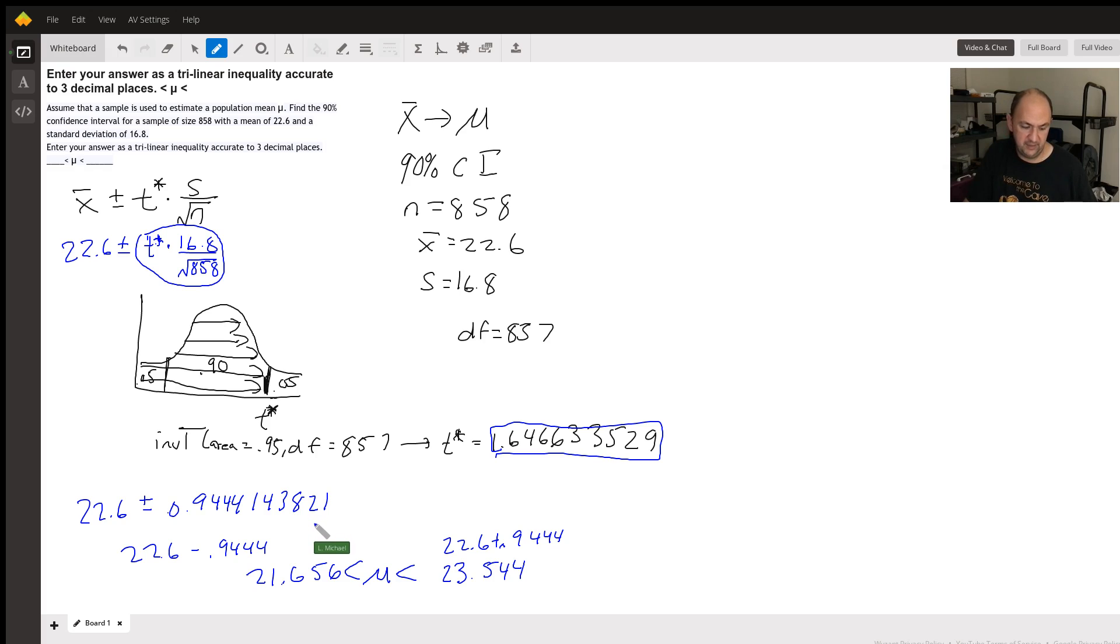If you have a TI-84 calculator, you can confirm this by going to stat, then to your tests section, and running a T-interval. Let me verify using the T-interval test. X̄ is 22.6, standard deviation is 16.8, sample size is 858, and confidence level is 0.90. The calculator confirms: 21.656 and 23.544.